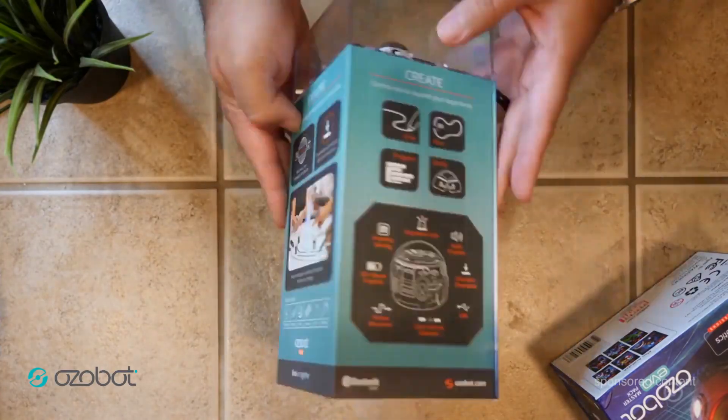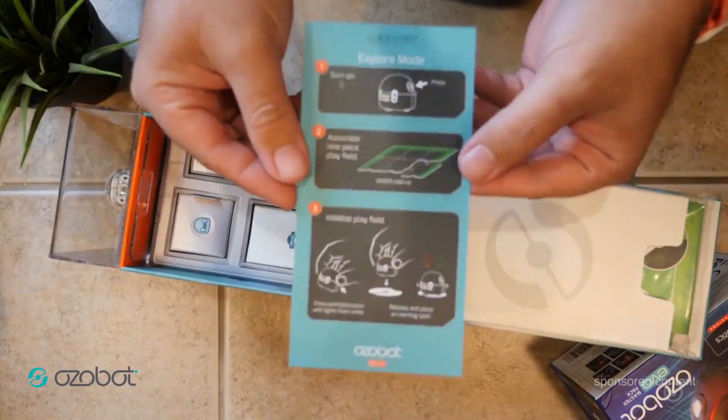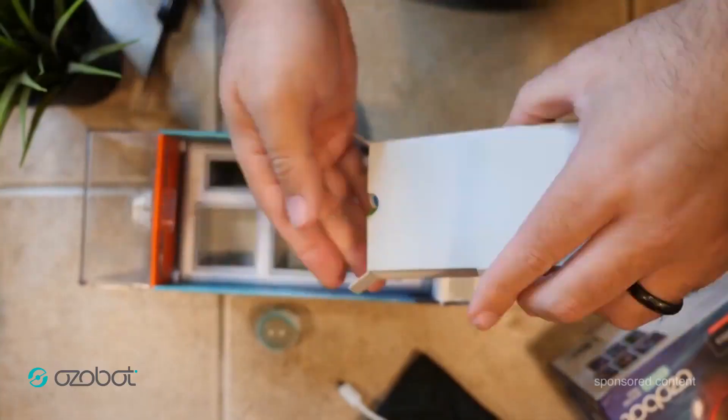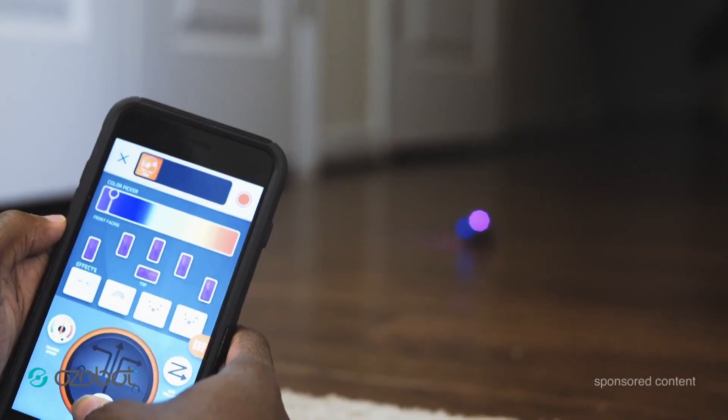Unboxing the Ozobot Evo reveals that they've included a bunch of stuff in the box to help you get up and running in no time. You can also control this with your smartphone device when you download the app that goes with it.